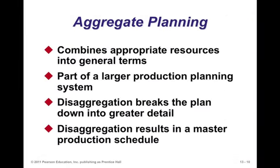The process combines resources in general terms and is part of a larger production planning system. Aggregation at a later stage breaks aggregate decisions down into specifics. If you decided how many laptops to produce in a given period, you now need to break that down into 13-inch versus 15-inch versus 17-inch screens over the short period. That disaggregated production plan results in a master production schedule, where you schedule specific resources to produce each item that constitutes the aggregate product.